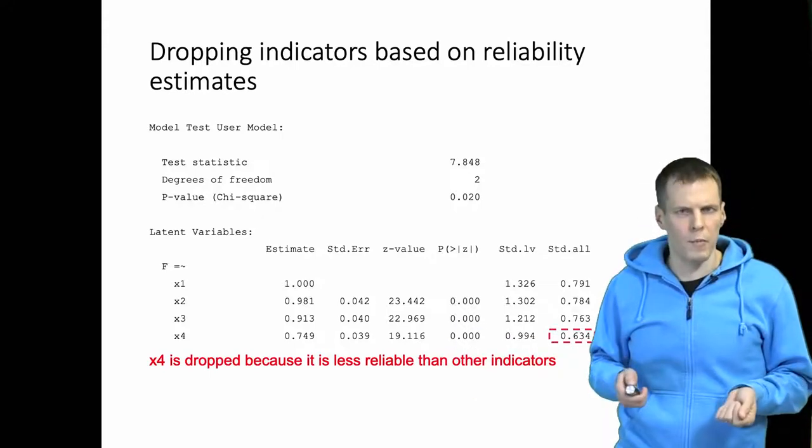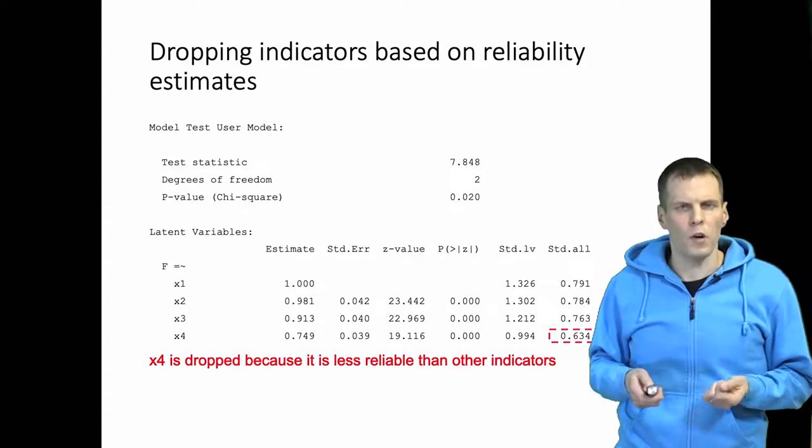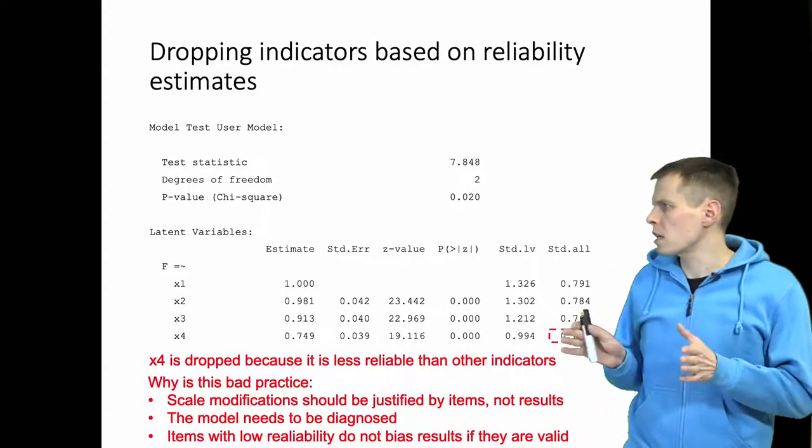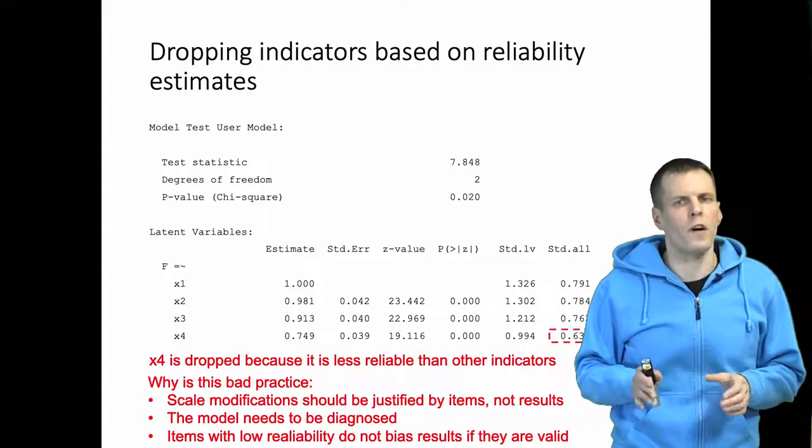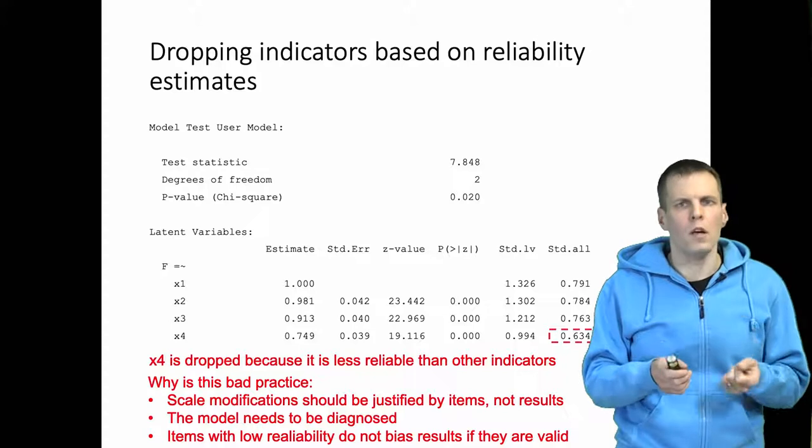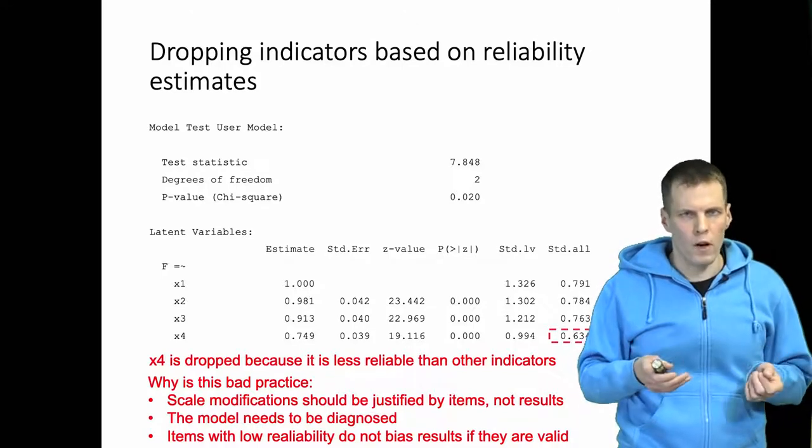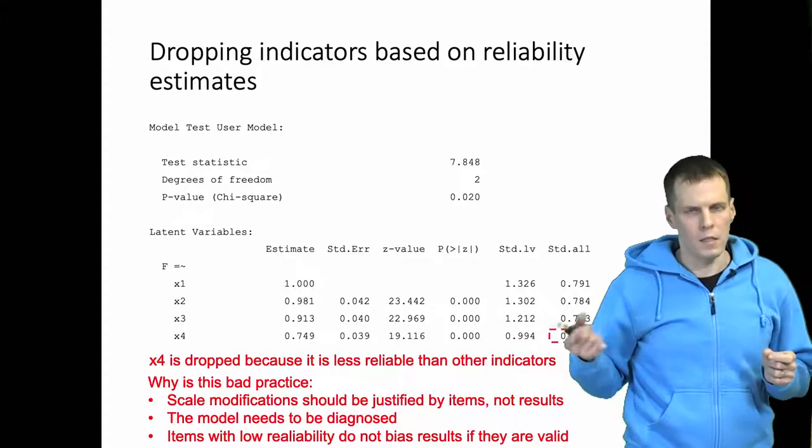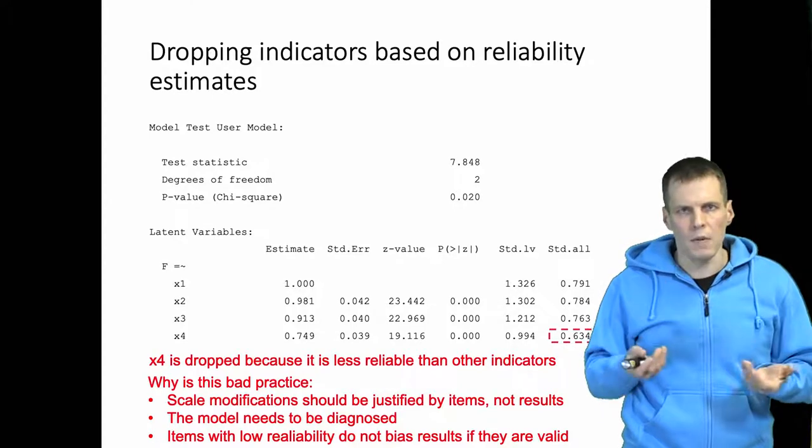So why is this bad practice? This is bad practice for a couple of reasons. Scale modifications should be justified by the items, not by the results. You should actually look at the item x4 and then tell why you think that it is less reliable, instead of just saying that it is estimated to be less reliable.